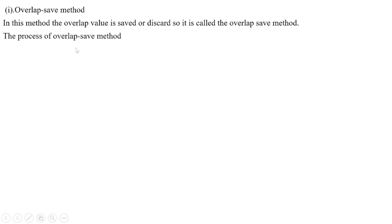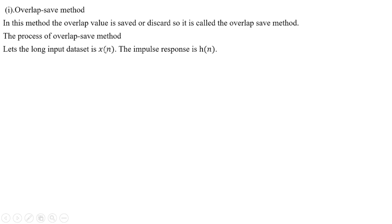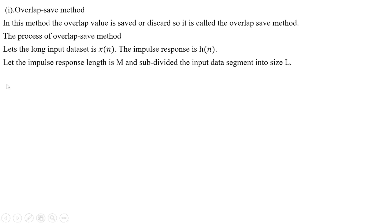The process of the overlap-save method: let a long input data set be x, and the impulse response be h. The impulse response length is m. Subdivide the input data segment into blocks of length l.